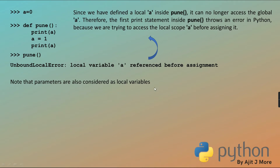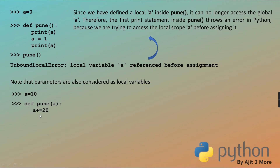Note that parameters are also considered as local variables. Whatever parameters you pass, they are local - their scope is restricted to the function. Example: a equal to 10. This is on the terminal which is outside the function, so this is a global 'a'. You have defined one function 'pune' with parameter 'a'. The name of the parameter is 'a', but it is not the same as this global 'a'. That local 'a' is incremented by 20 and becomes 30, but only the local 'a' becomes 30, not this outer 'a'.